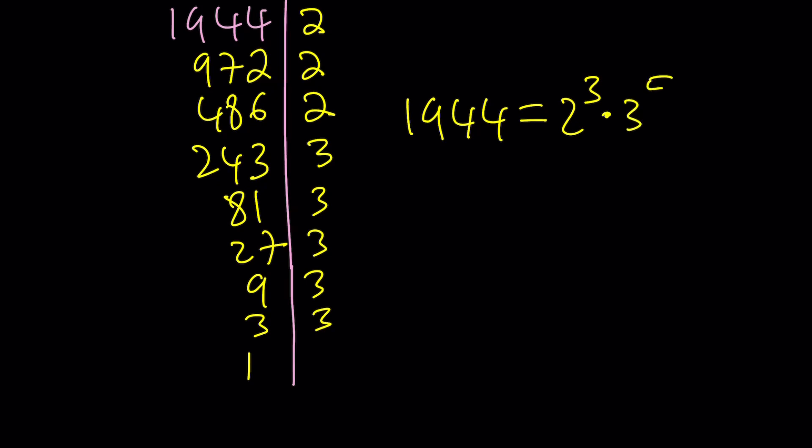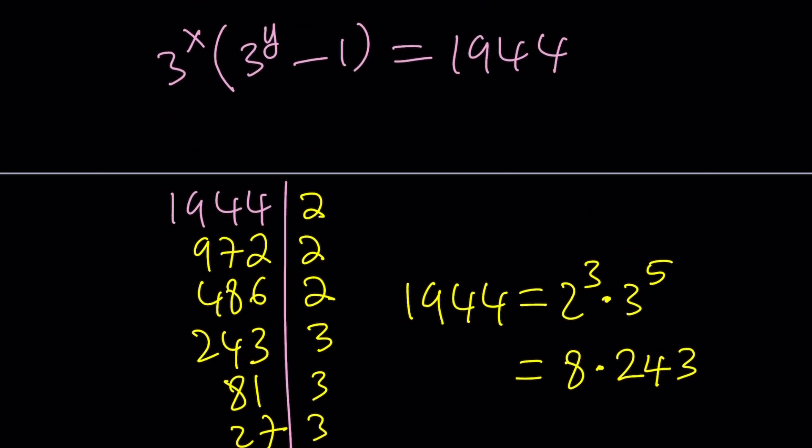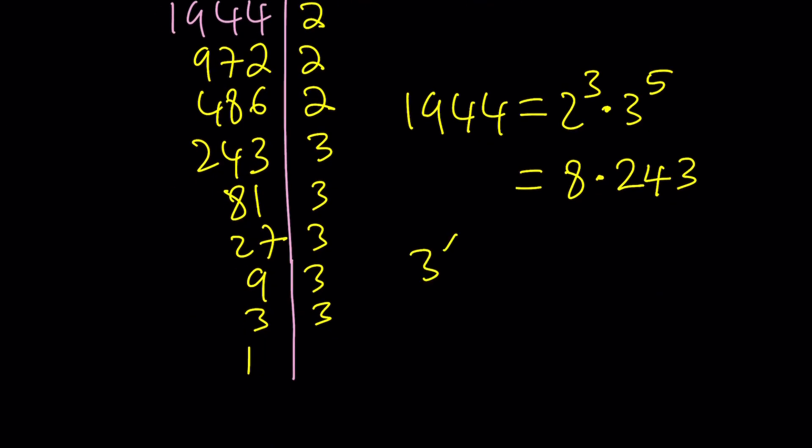Uh-oh. Those are such large numbers. Now, here's the idea. We could go ahead and write this as 8 times 243. Am I right? And then set this equal to something. What was the main factors? 3 to the x and 3 to the y minus 1. So, I could say that probably this is 243, which means x is 5, and this is an 8.